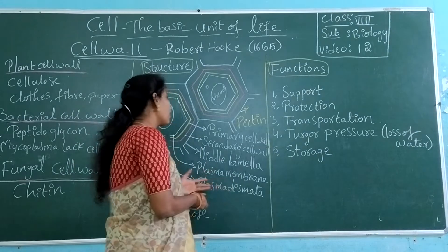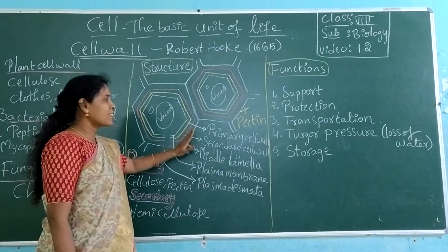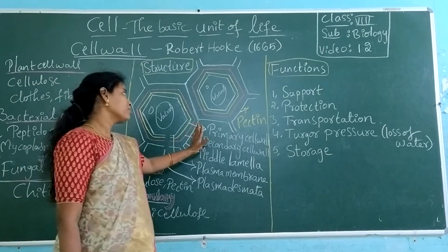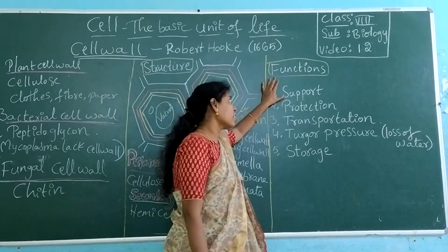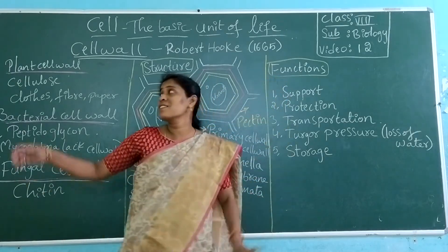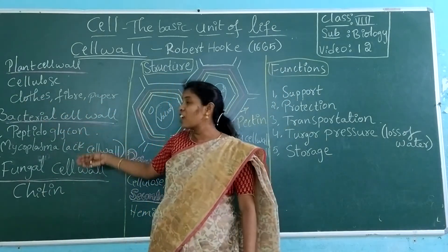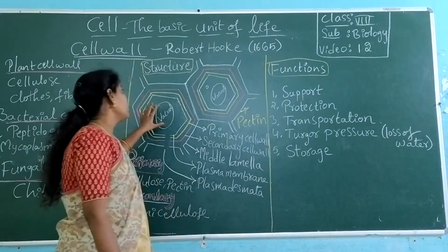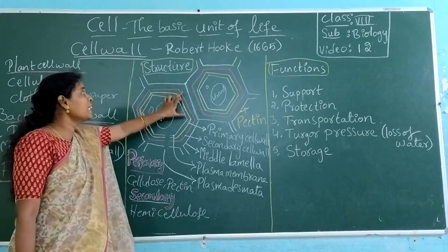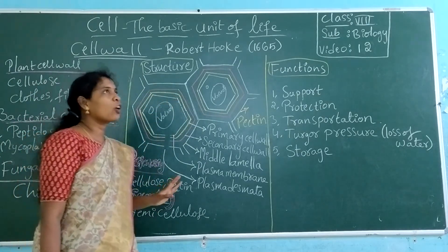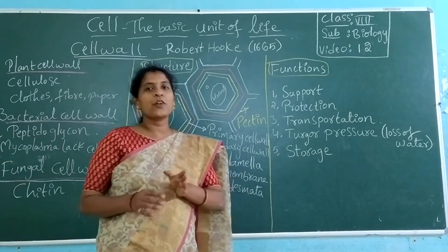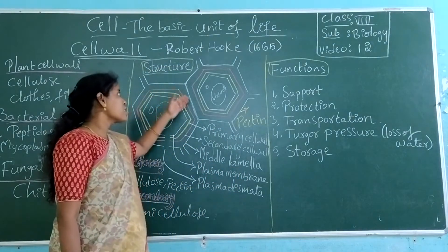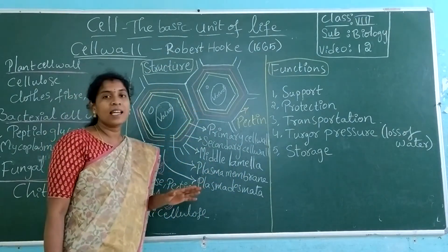Generally, this cell wall has three layers. What is the function of these layers? These layers, when forming the cell wall, give support to the plant cell, bacteria cell, or fungal cell. For any cell, the cell wall gives protection. The three layers are present — they are like your compound wall. Just as your house is protected by your compound wall, the cell is also supported by this cell wall.